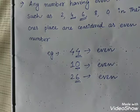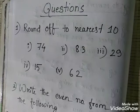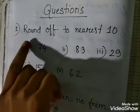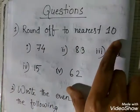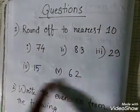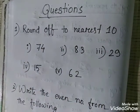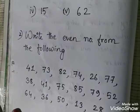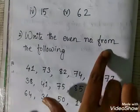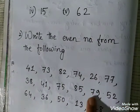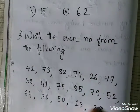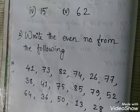Now I will give you some practice questions to solve at home. The first set: round off to the nearest 10 — I have given you five numbers. The second set: write the even numbers from the following list of numbers. Try to find the even numbers from those.